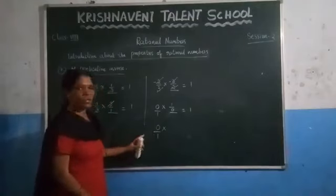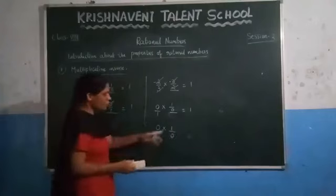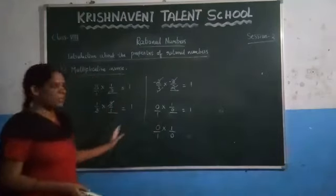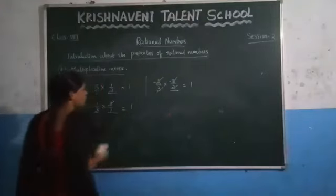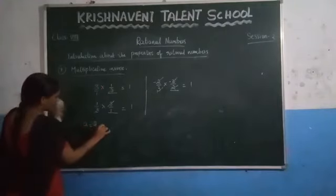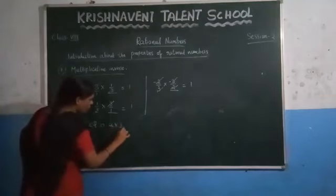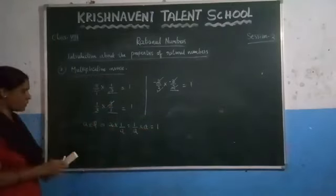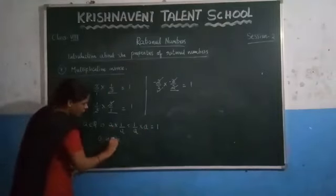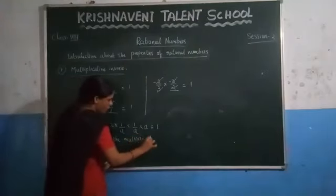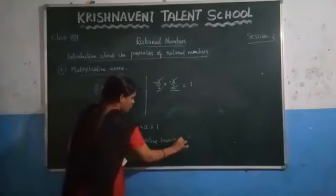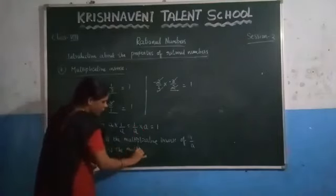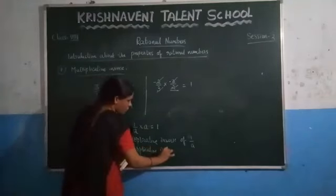We are writing the reciprocal of the given number. What we get is 1 by 0, which is undefined. So the multiplicative inverse of 0 does not exist. How do you state this property? Consider a rational number A. Then the property says: a into 1 by a must be equal to 1 by a into a, which equals 1. This property we call the multiplicative inverse. You can write: A is the multiplicative inverse of 1 by A, or 1 by A is the multiplicative inverse of A.